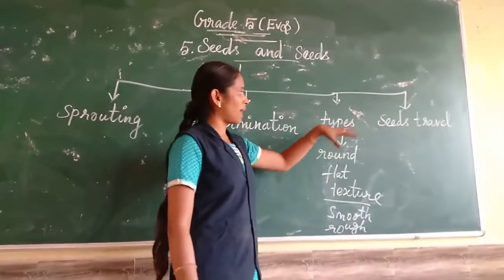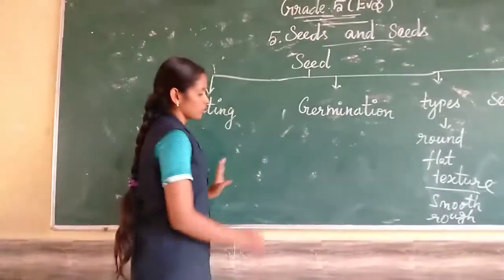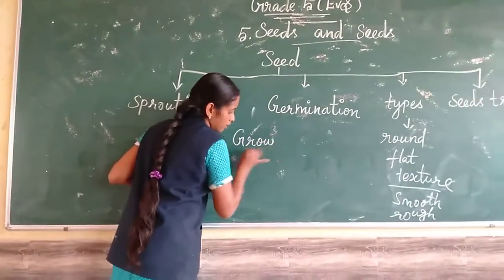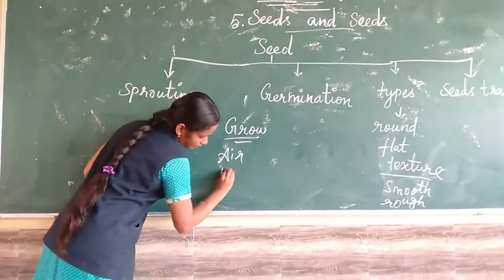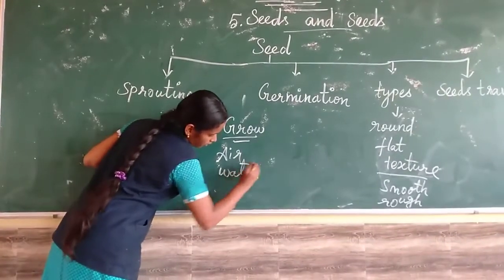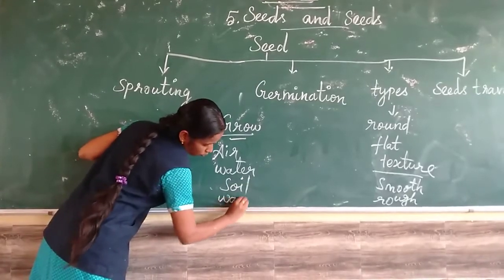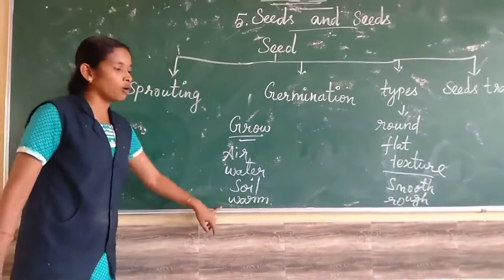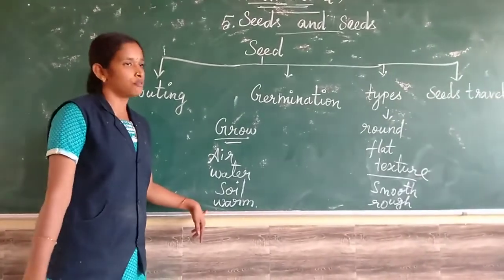How does the plant grow? What things do you need for growing? Air, water, and soil. Warmth also — warmth is like sunlight. Using warmth only, they can get their food.